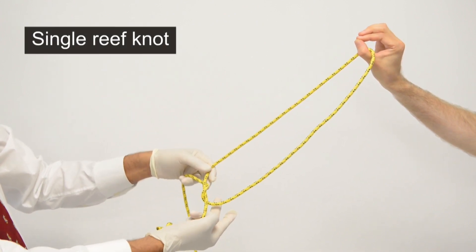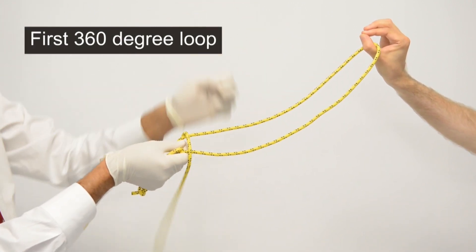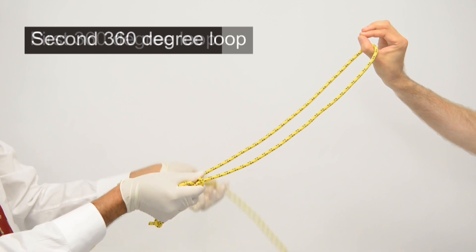Next, using the same tail end of the rope in your left hand, tie two 360-degree loops going over both arms of the rope.